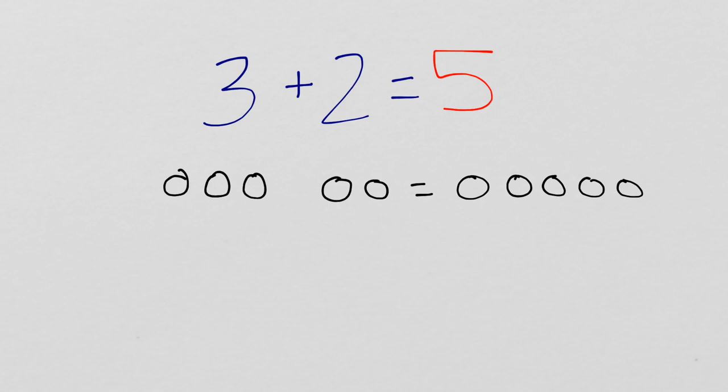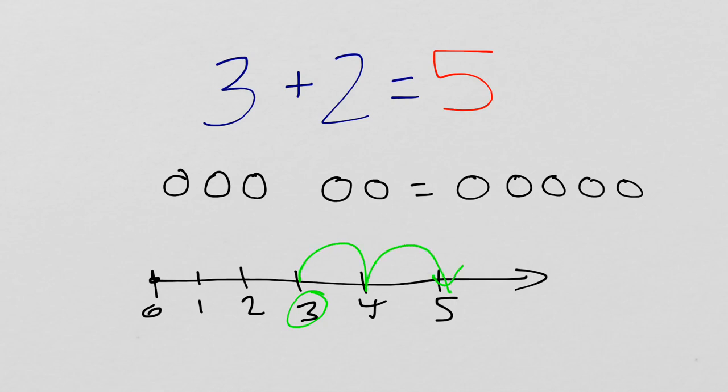I might also think about it this way. I might imagine a number line. I would start at three and then I would add on two more. One, two. That also brings me to five.